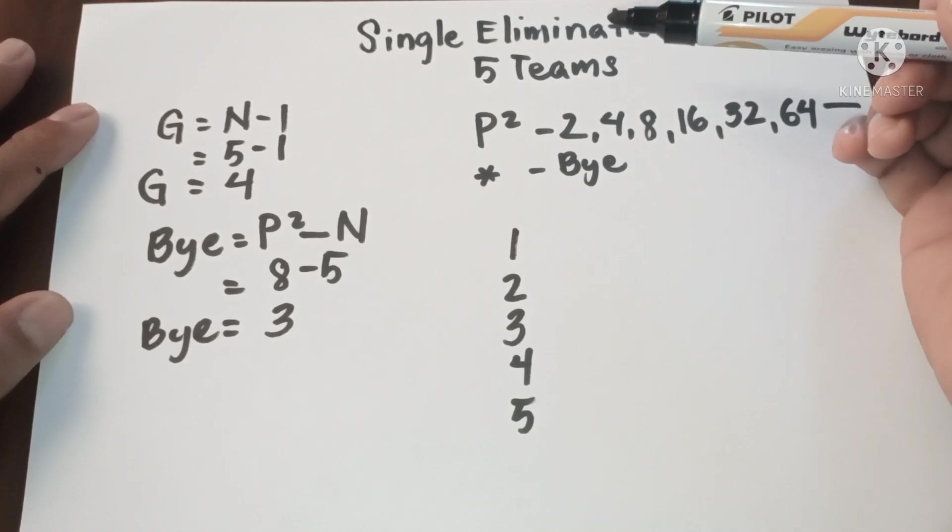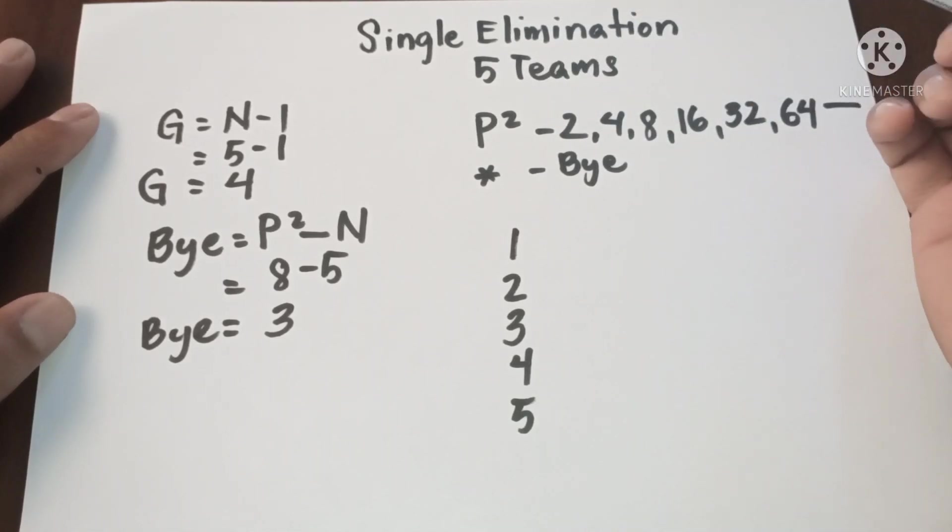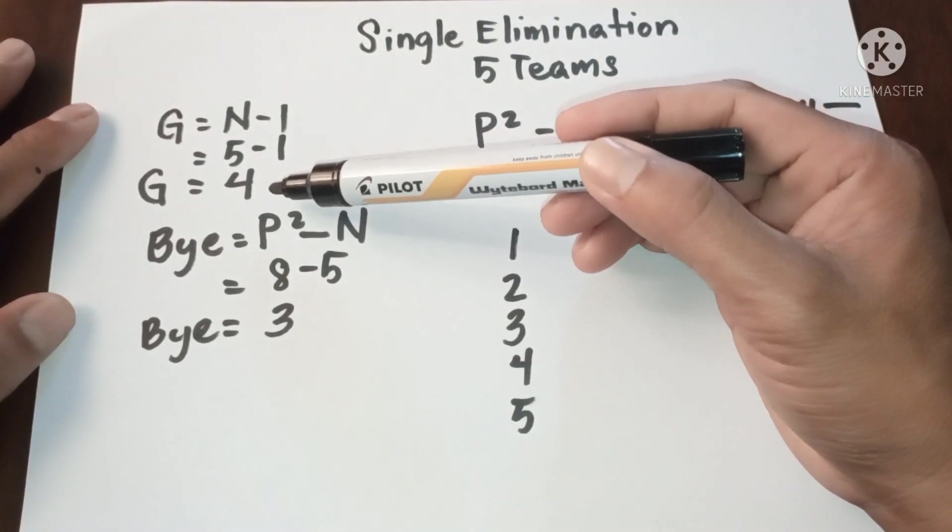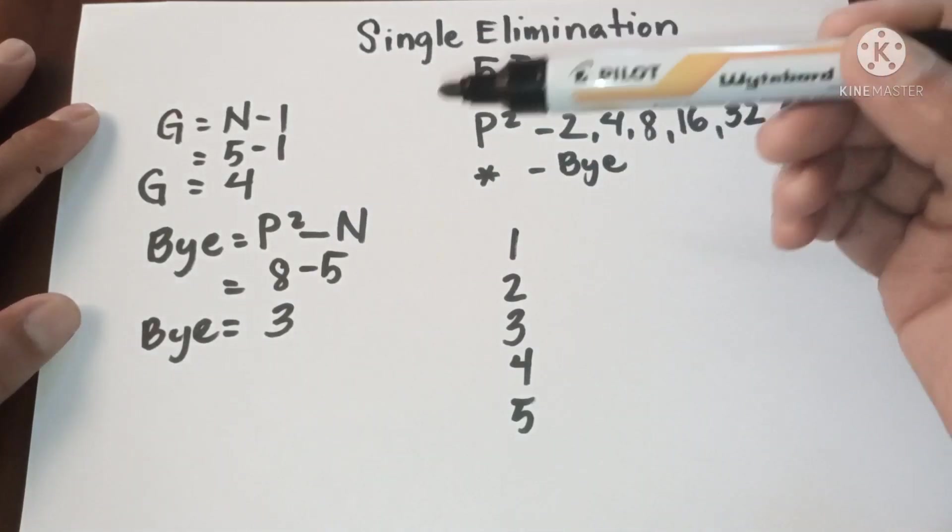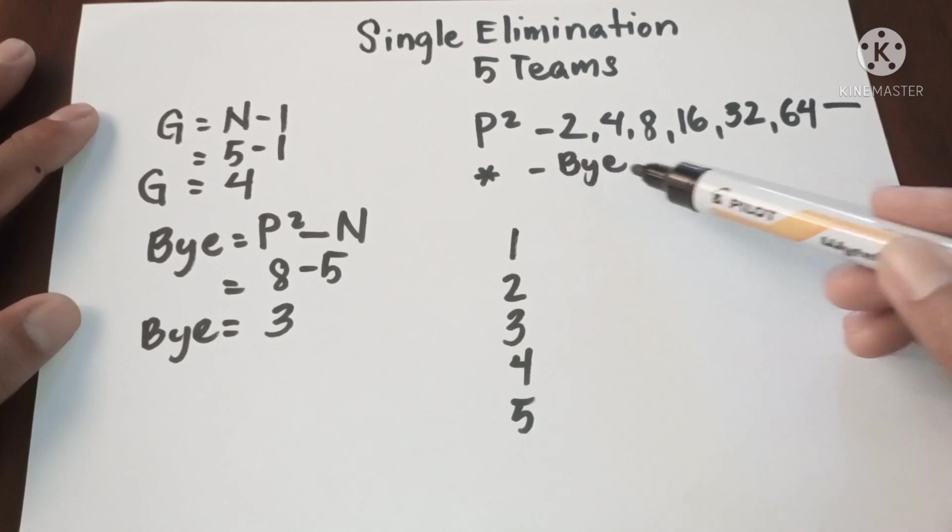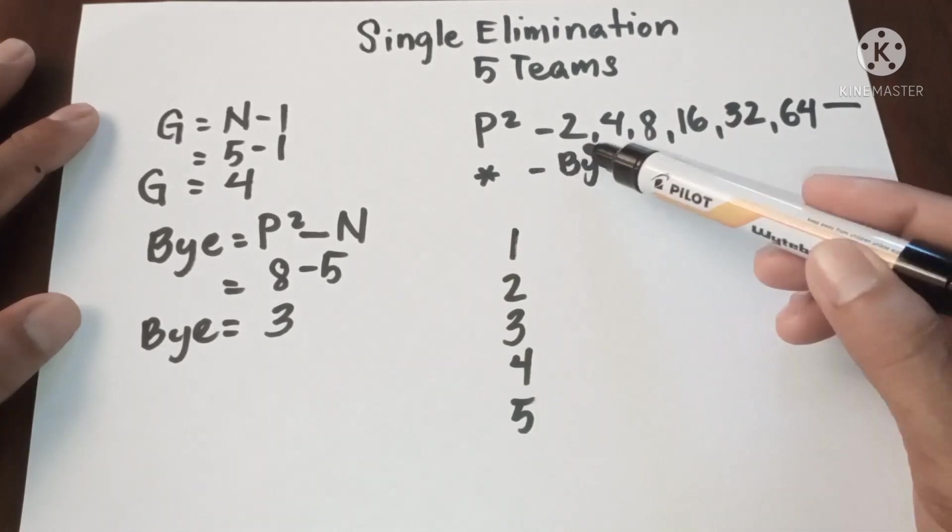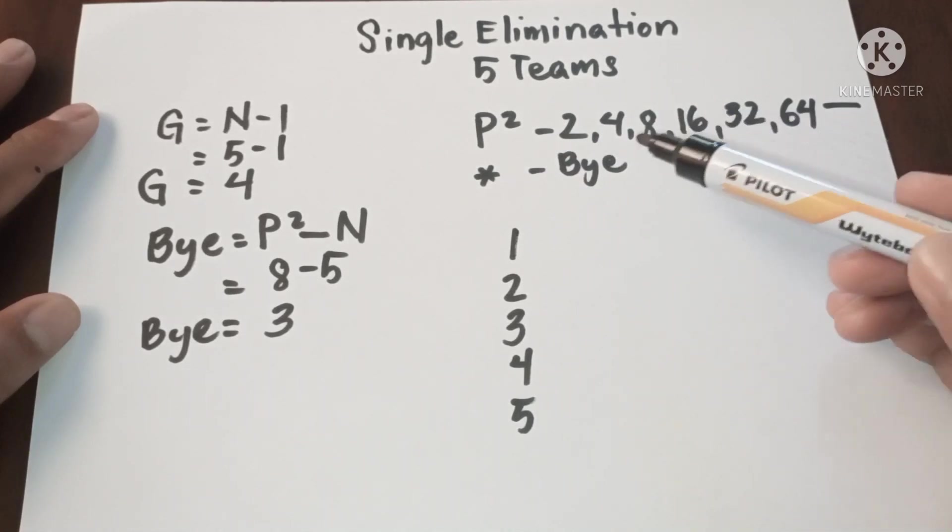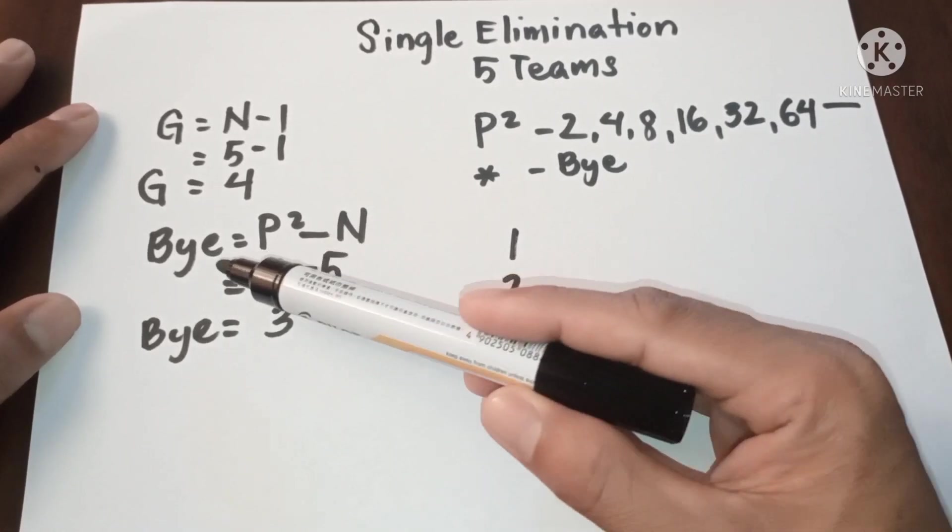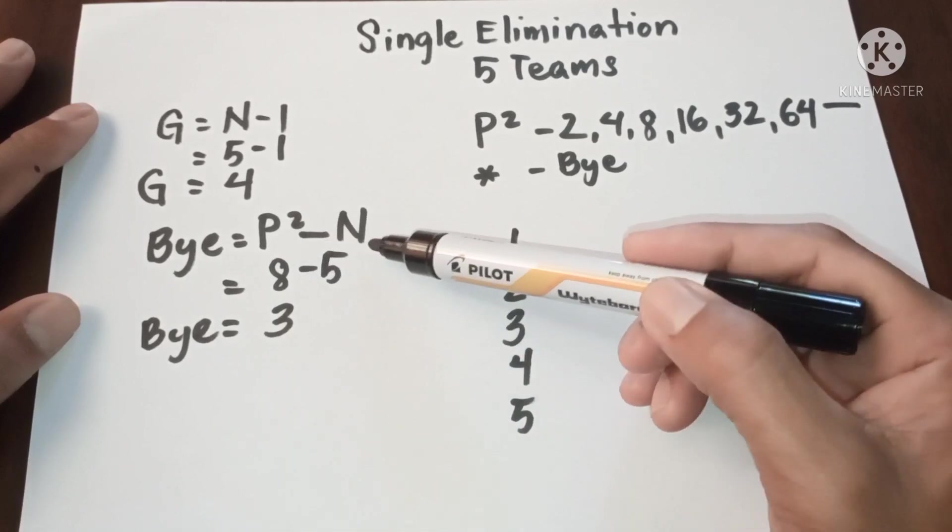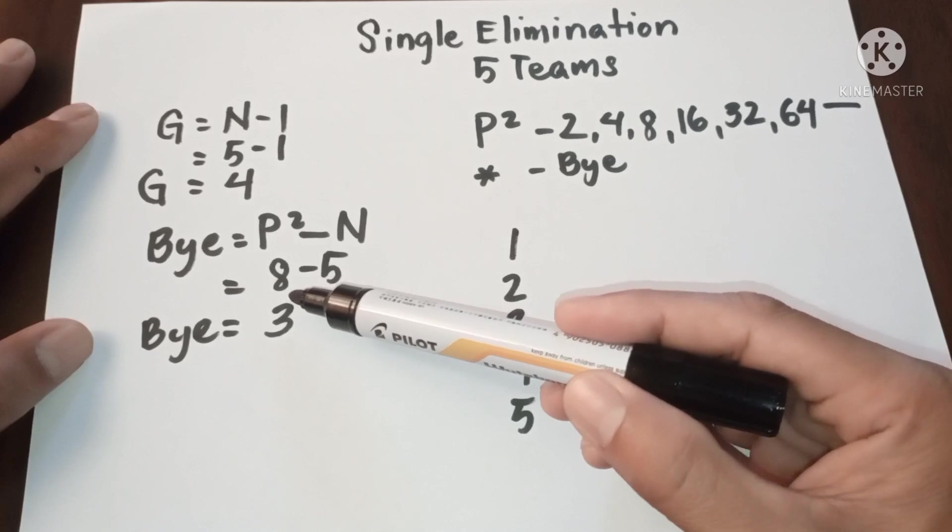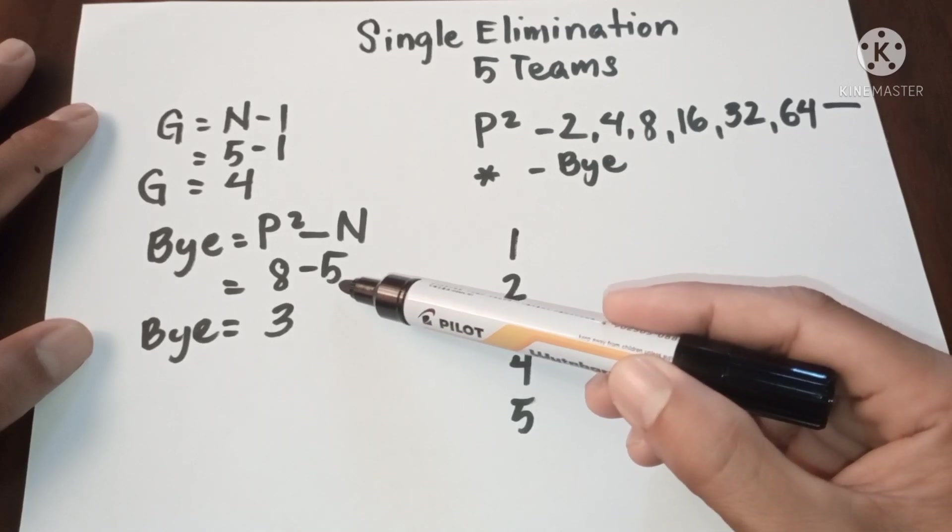Since we have five teams, we have four games. And since five teams is odd from this power of twos, meaning it has byes. So the formula to determine the bye is: bye equals power of two minus N.